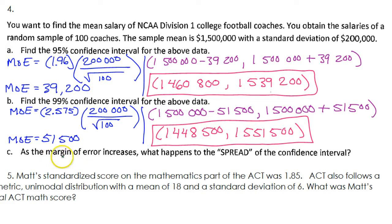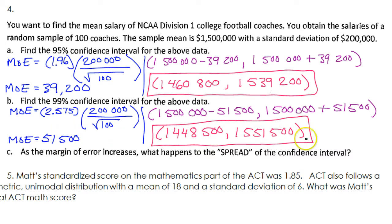Notice: as the margin of error increases, since this is the number we're adding and subtracting, if this number is bigger, then the spread is going to increase. The bigger the margin of error, the wider this net is. That's why we can be more confident that the real answer is going to be in there somewhere — because it's a wider interval.